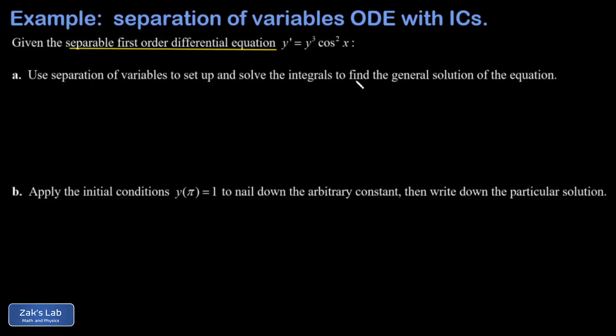It turns out to be kind of complicated in this case and it's best to just leave it as an implicit relationship. We're not going to solve for y in the end because we would end up losing part of our solution. To use separation of variables we express y prime as dy/dx.